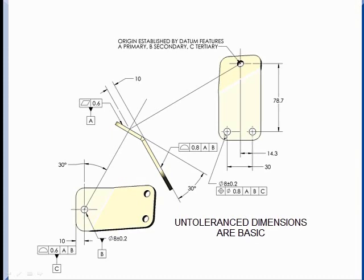So now the dimensioning becomes simpler. From my zero zero zero zero origin established by my datum features, I have the 78.7 dimension and then the 14.3 and the 30 dimensions. But they're not locating a point in space, they're locating the axis. So I can then measure the holes to find out how much they've deviated from their basic location.